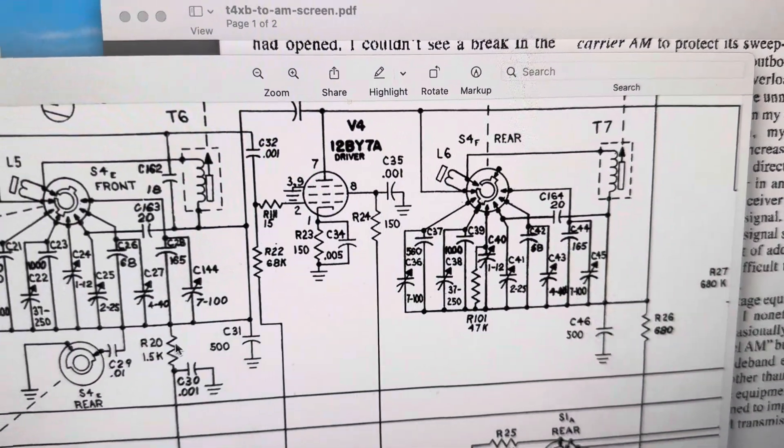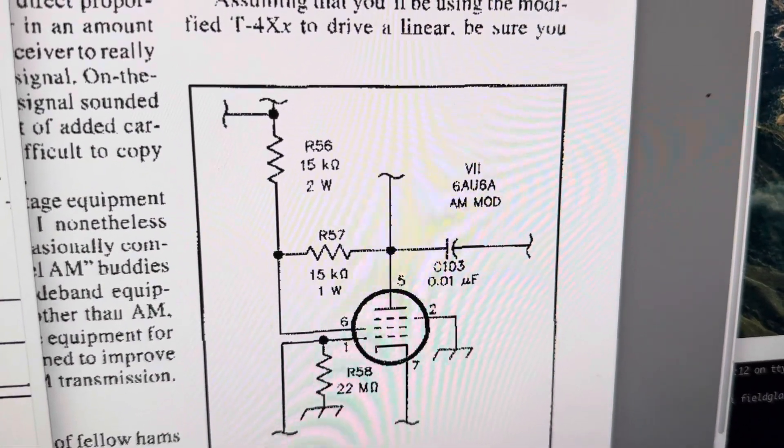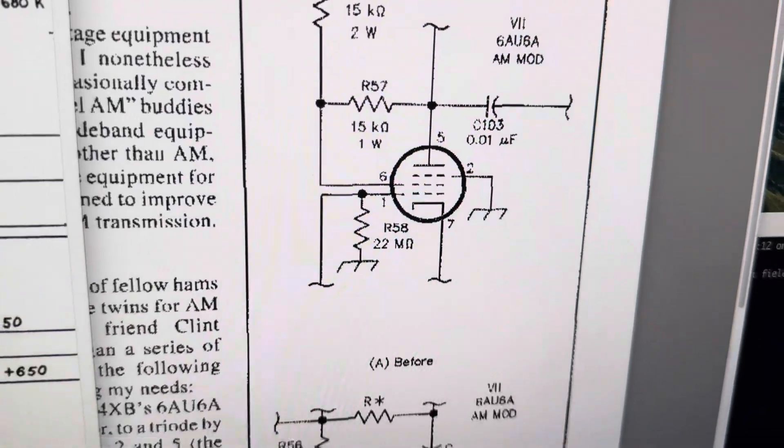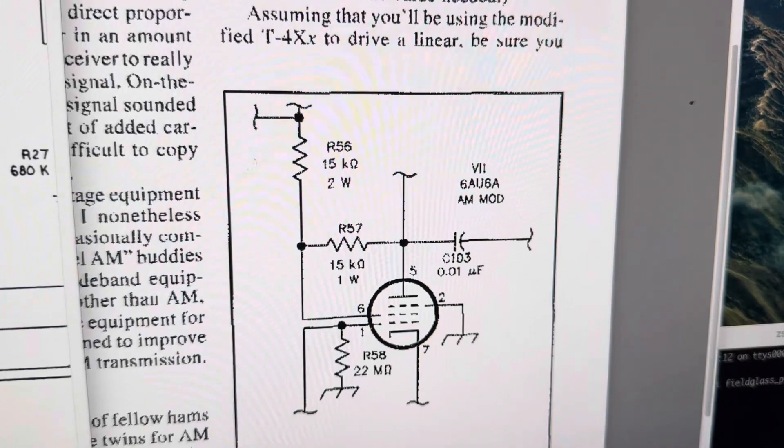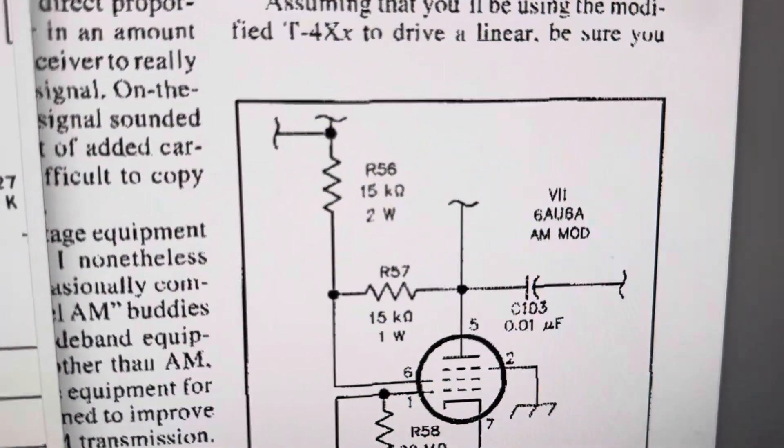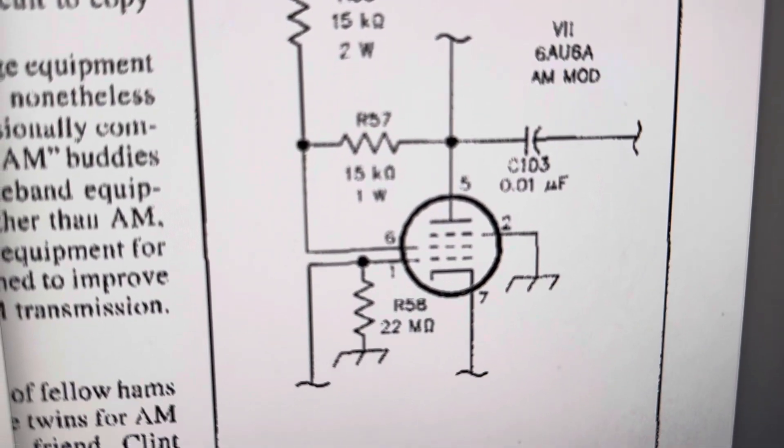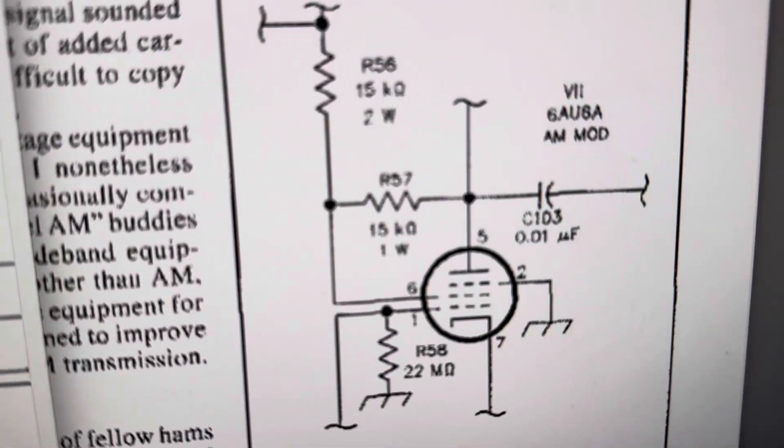Here's some work on a mod for a Drake T4XB transmitter. The gentleman who designed this proposes that the tube used for the AM modulator, the 6AU6A, can be turned around and made into a triode or something. I've found his recipe and implemented this modification as shown down here, which is B after.